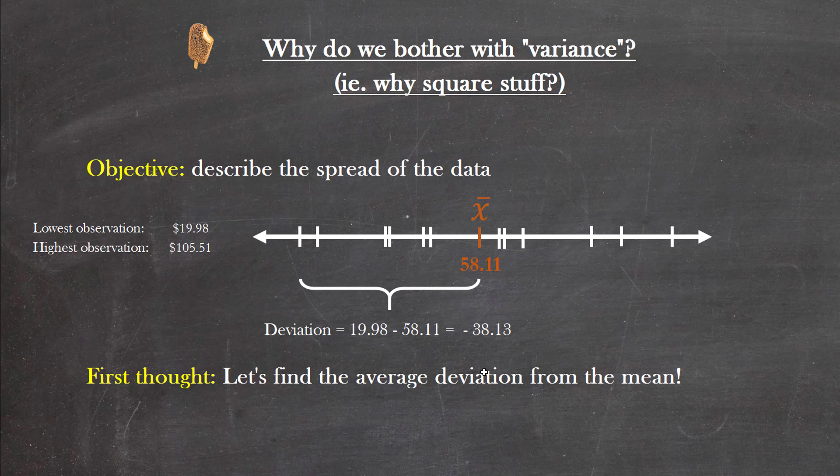The only problem is for many of these deviations from the mean - and in this case I'm showing you the deviation of that lowest observation from the mean, so that's 19.98 minus 58.11 - appreciate that that's a negative deviation. All of these on the left-hand side will provide you with negative deviations and all of these observations on the right-hand side are going to provide you with positive deviations. So if you're trying to find the average deviation, you're gonna have to sum them all up and divide by 12, right? I'm hoping that you're seeing the problem with that - you're actually going to get zero because the sum of all those deviations is zero.